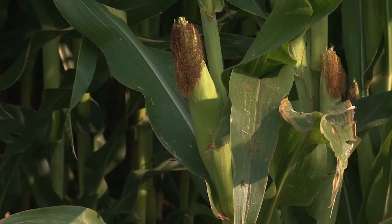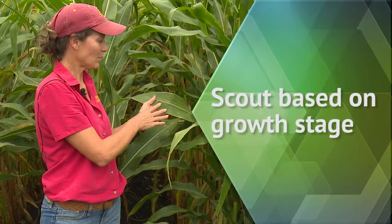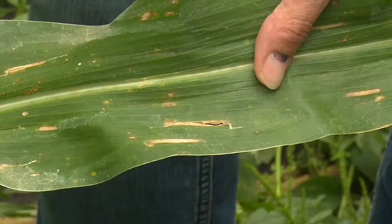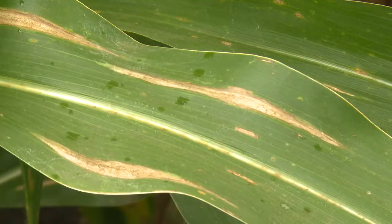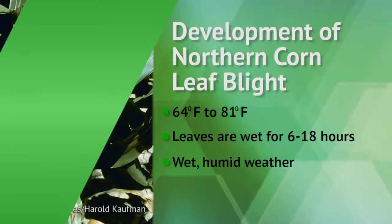It's a good idea to know what you're looking for, so based on the growth stage of the crop, what should you be looking for? It's tasseling, so you should probably be looking for foliar diseases. The way that we tell foliar diseases apart is by the shape of the spots. A rectangular spot is going to be gray leaf spot; a cigar-shaped spot will be northern corn leaf blight. Those are the symptoms that help us distinguish what the disease is.